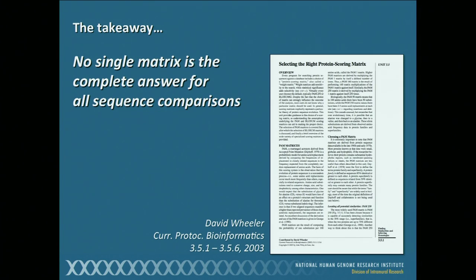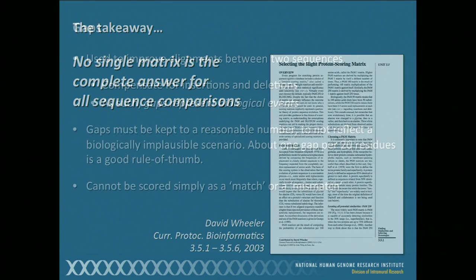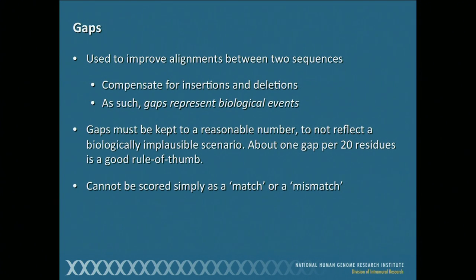Many of you have already done pairwise sequence alignments and multiple sequence alignments, and a lot of times you see gaps that are inserted to improve the alignment. The thing you have to keep in mind is that in putting those gaps in to improve the alignment, you have basically implicitly inserted a biological event — it could be a deletion, it could be an insertion. It's not just making it pretty by putting some gaps in. There is actually something that has to happen in the background to make that biologically true. Because of that, you have to keep the gaps to a reasonable number to not reflect a biologically implausible situation. The rule of thumb most people use is about one per 20.